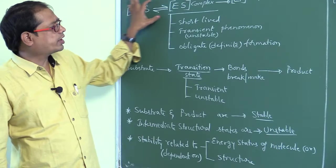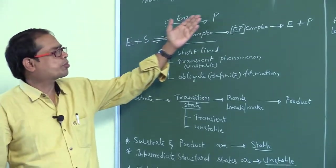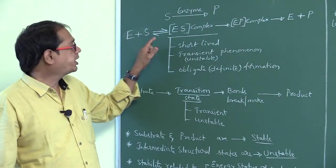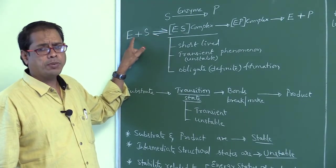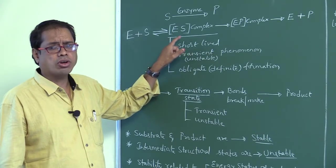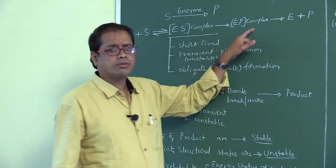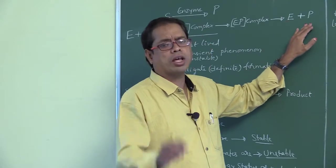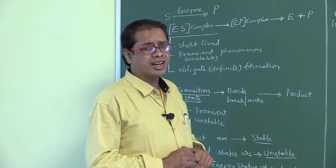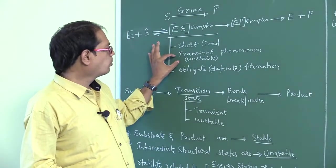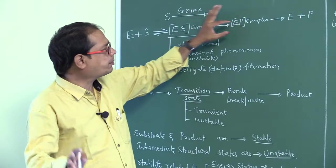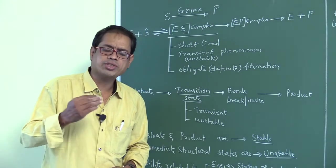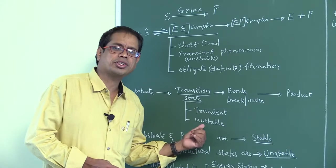This sequence is very important: substrate gives rise to products, and between these stages E plus S gives a reversible reaction forming the ES complex, which gives the EP complex, which finally gives enzyme and products. Of the following, the transient phenomenon is the ES complex — not the EP complex. The substrate reaches a new state called the transition state, which is unstable.